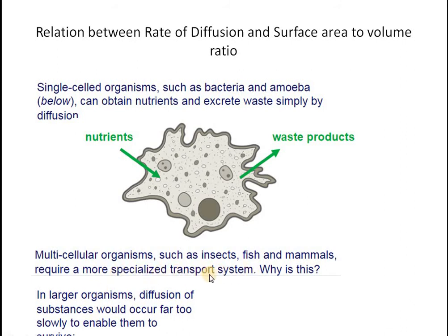If you are a multicellular organism made up of many cells, the diffusion rate would be so slow that it would not be sufficient to provide each cell with nutrients or to take out the waste products. That is why we have specialized transport systems — for example, the circulatory system, blood circulatory system, excretory system, and respiratory system. These systems are present in complex multicellular organisms because diffusion rate alone cannot provide sufficient glucose, amino acids, and oxygen, nor efficiently expel waste products like urea and carbon dioxide.